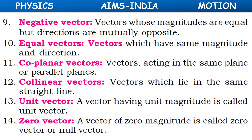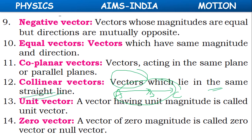If vectors AB and BC lie on the same straight line, they are called co-linear vectors.